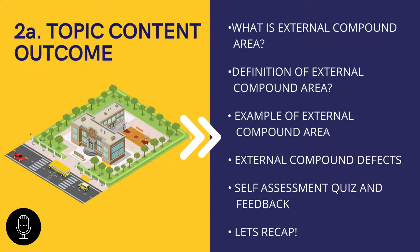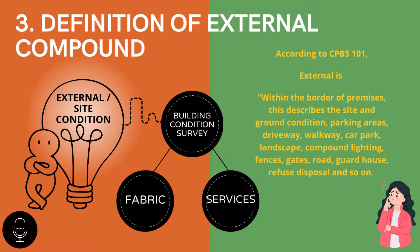Now let's start our journey. First, you have to understand what the external compound area for the building actually is. According to CPBS 101 Version 2, Building Condition Survey is divided into three areas: external, fabric, and services. This is to examine the condition and significant defects of the buildings. External area means within the boundary of the premises — this describes the site and ground condition, parking areas, driveway, walkway, car park, and landscape compound lighting.